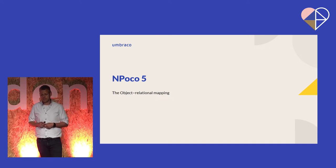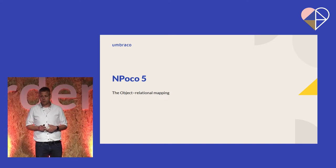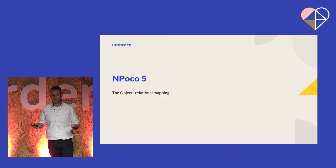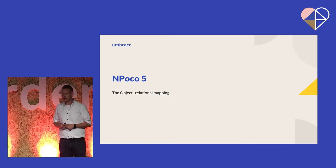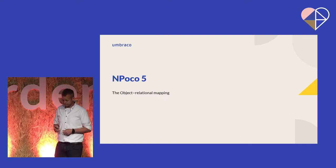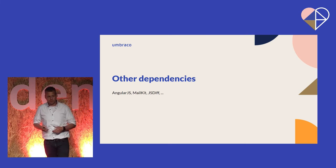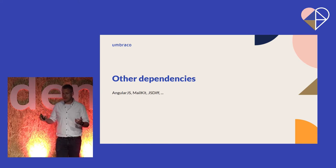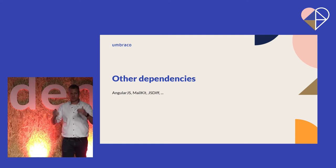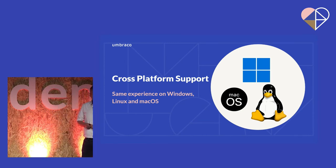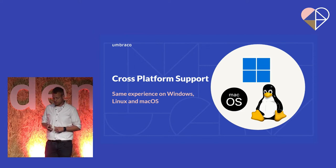We also updated NPoco. NPoco is the mini object-relational mapper we use. It's now running NPoco 5. NPoco 5 was actually released already when we released Umbraco 9, but due to a bug we couldn't update — there were breaking changes and it didn't work. But NPoco managed to fix those, so we can upgrade. In general, we updated all our dependencies — a lot of patch versions also, like the AngularJS mail kit that we use to communicate with mail servers, and JS Diff that we use to compare content versions in the back office.